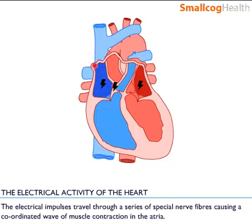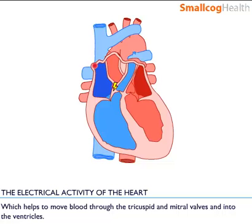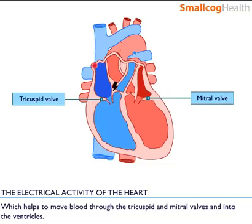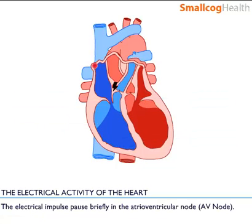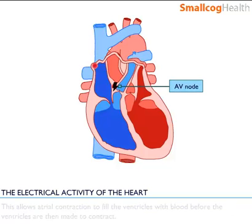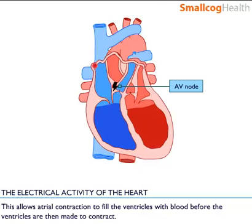The electrical impulses travel through a series of special nerve fibres causing a coordinated wave of muscle contraction in the atria, which helps to move blood through the tricuspid and mitral valves and into the ventricles. The electrical impulses pause briefly in the atrioventricular node, allowing atrial contraction to fill the ventricles with blood before the ventricles are then made to contract.